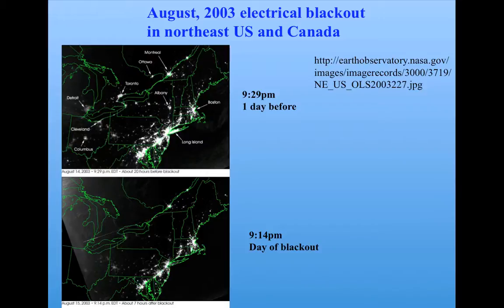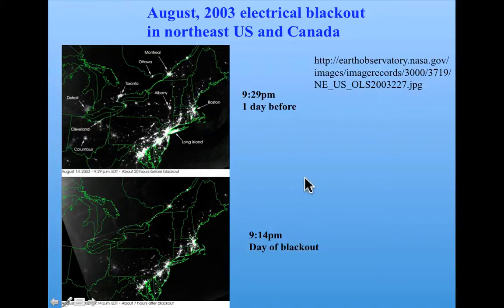Evidently, a power station in Ohio got overloaded because of a downed power line. It transferred its load to another power station that itself got overloaded and shut down, and so on in a kind of domino effect in which there was a cascade of failures, bringing down a lot of the electrical grid of the Northeastern United States. You can see before the blackout there are lots of lights, much diminished on the day of the blackout — a common example of cascading failure.